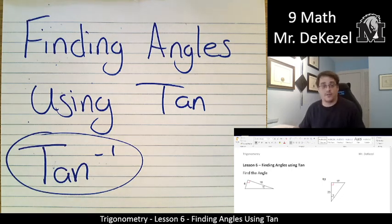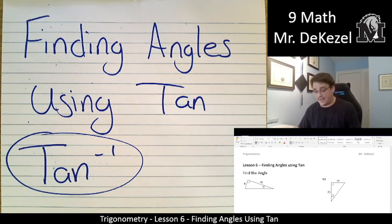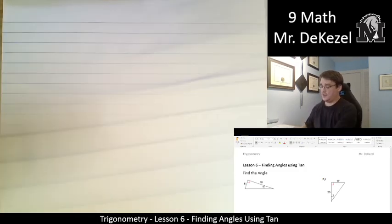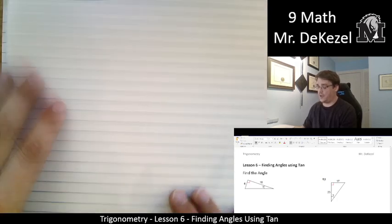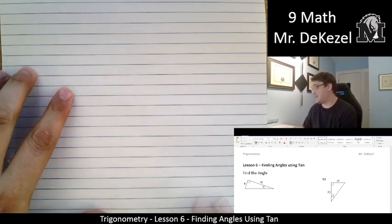Hello grade 9 math class. Welcome back to another lesson. Today we have number six. We are going to find angles in a triangle instead of sides. So it's a little bit of a flip, but we're using almost the same button on a calculator. Let's get into it, do some examples. I think that's the best way to do this, but just know that we are looking for angles in these next couple of lessons.